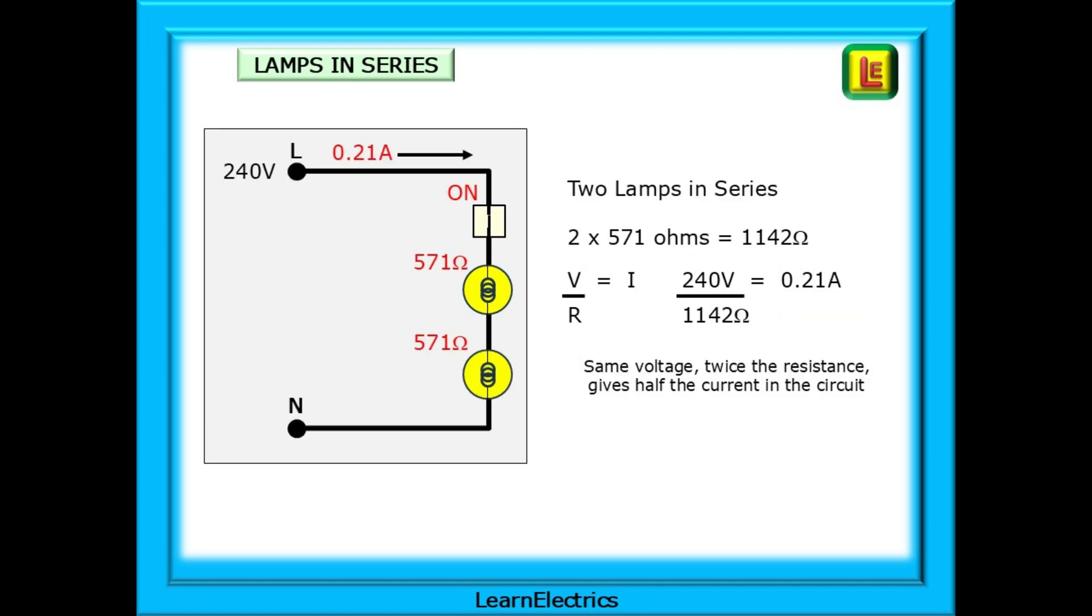Now add another lamp in series with the first. Our total impedance is 1142 ohms. Calculate the current. 240 volts divided by 1142 ohms is 0.21 amps of current flow. Same supply voltage, twice the resistance gives half the current in the circuit.